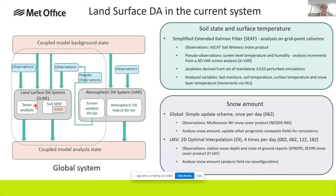The snow analysis is done differently in our global and UK systems. The global uses a simple update scheme to give a daily snow amount analysis using observations from the NESDIS IMS Northern Hemisphere snow cover product. The UK has a 2D optimal interpolation that runs four times a day, using station snow depth reports from the SYNOP network along with a satellite-based snow cover product to analyze snow amount.